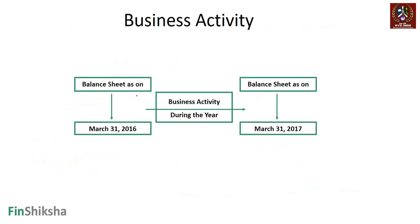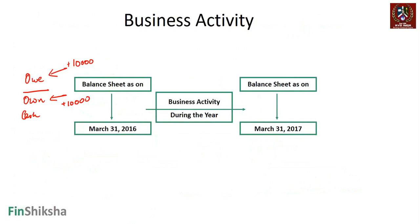A balance sheet is like a snapshot of a business at any given point in time - what you owe and what you own. In the next second, if I borrow 10,000 rupees from a bank, my owing increases by 10,000 and my cash balance also increases by 10,000. The balance sheet remains balanced. If I borrow another 10,000 rupees, sources of funds go up by 10,000 and bank balance goes up by 10,000.